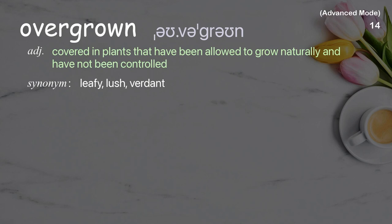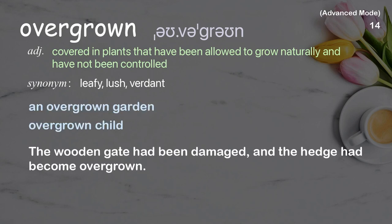Overgrown: Covered in plants that have been allowed to grow naturally and have not been controlled. Examples: an overgrown garden, overgrown child. The wooden gate had been damaged and the hedge had become overgrown.